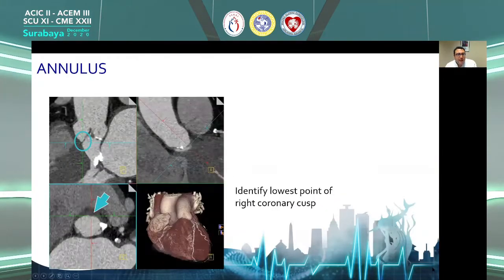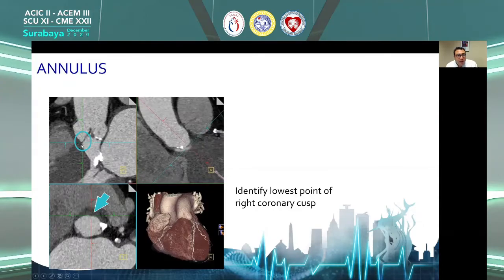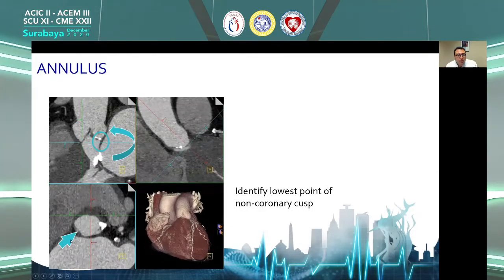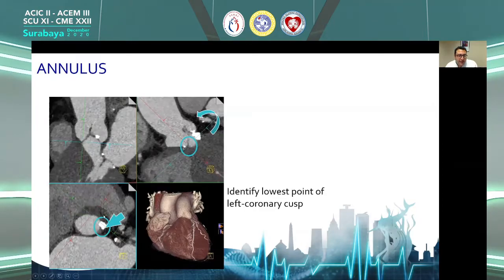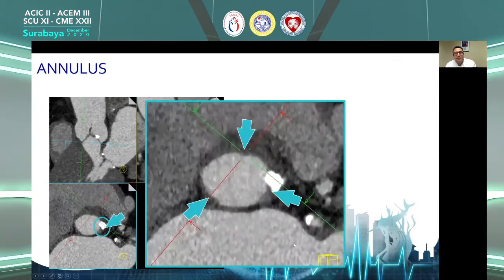Using standard CT software that comes with any machine, we pragmatically start by looking at one cusp insertion point — typically the right cusp insertion point, where the right leaflet connects the LVOT. We fix the crosshairs at this point, look for the non-coronary cusp insertion point, which is usually at the inter-atrial septum, and then find the left cusp insertion point. In this systematic way, you adjust the annular plane — a plane connecting all three cusp insertion points.